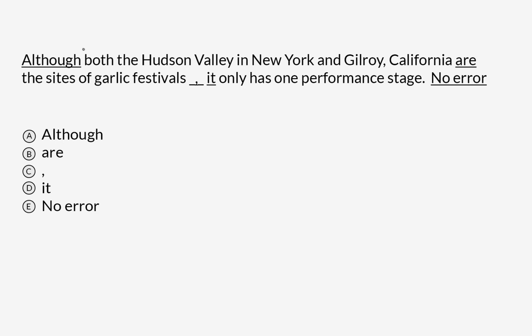Let's go through these underlines one by one and see if they contain an error. What do we know about the word 'although,' option A? It is a subordinating conjunction, which means it sets off a dependent clause.